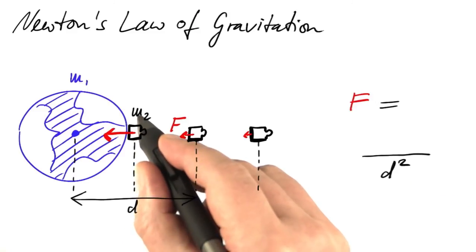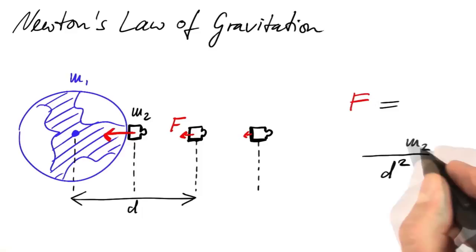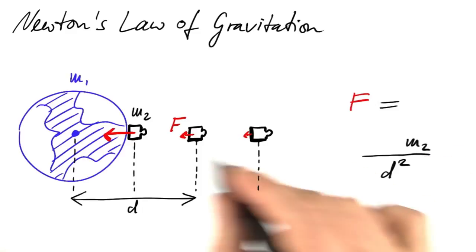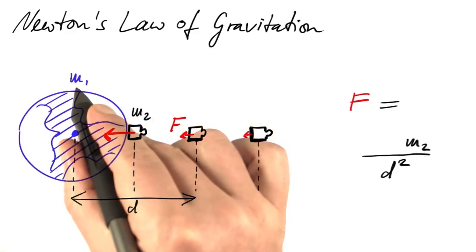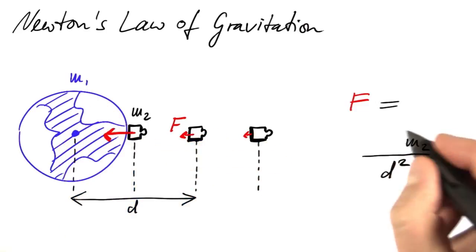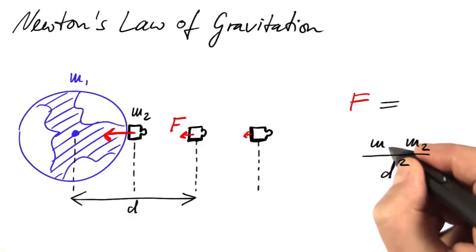If we use twice the mass, we should have twice the force, so the mass appears in the numerator. And if all masses are created equal, the mass of the Earth should have the same role, so the mass of the Earth too should appear in the numerator.